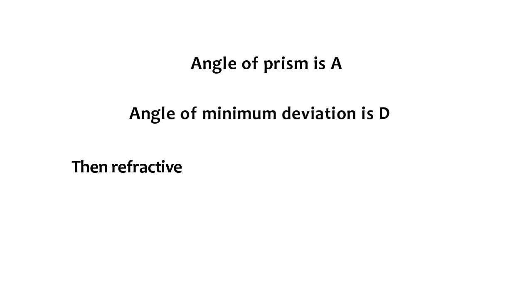The angle of the prism is A. The angle of minimum deviation is D. Then the refractive index of the prism N is equal to sine of A plus D divided by 2, divided by sine of A divided by 2.